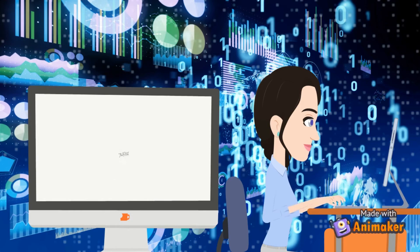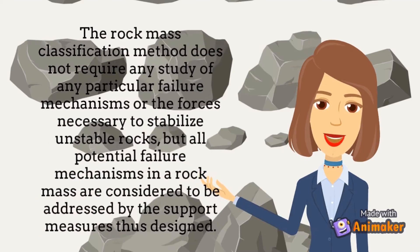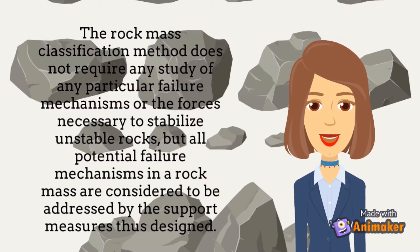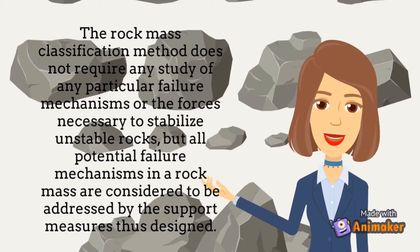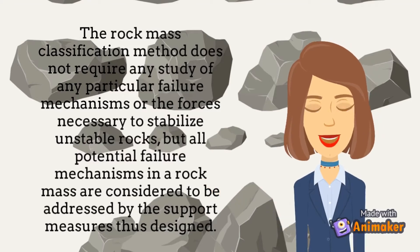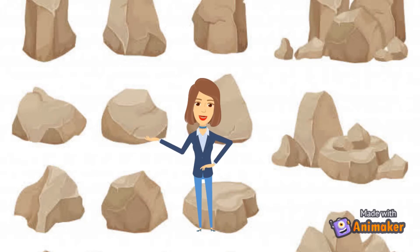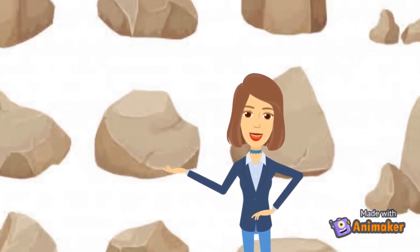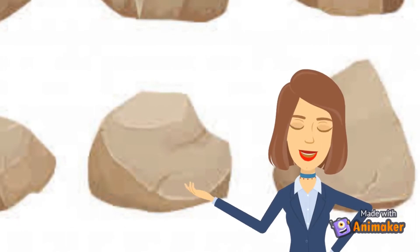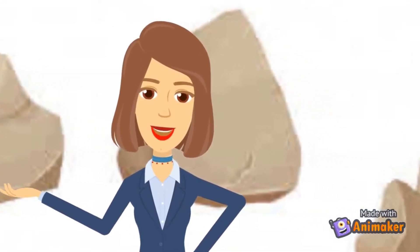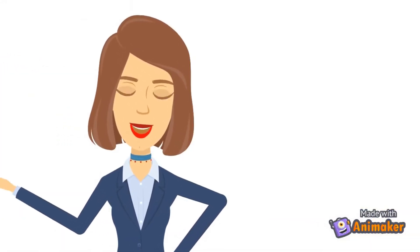Q and RMR do not require any study of any particular failure mechanism for the forces necessary to stabilize unstable rocks. But all potential failure mechanisms in a rock mass are considered to be addressed by the support measure thus decided. Two have stood out among the many rock mass qualification techniques created for use in underground excavation engineering. They are referred to as rock mass rating, which is RMR, and tunneling quality index, which is Q.